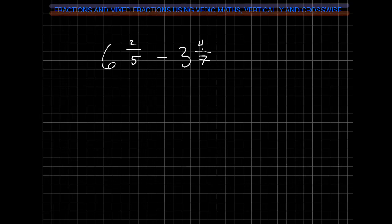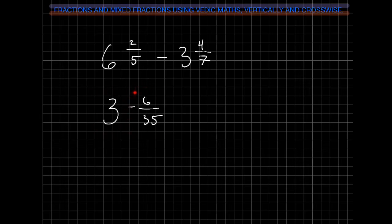Here we have a situation where the whole number is positive but the fractions are negative. So 6 minus 3 gives us a positive 3. Then vertically and crosswise: 2 times 7 minus 4 times 5. So 14 minus 20 gives us a negative 6 over 35. We have a positive whole number and a negative fraction, so reduce the whole number by 1. Then 35 minus 6 gives us 29 over 35. Our final answer is 2 and 29 thirty-fifths.